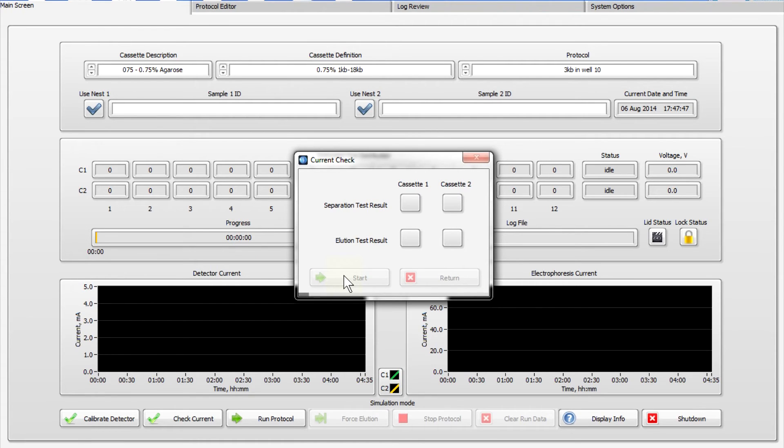A pop up window with a progress bar will appear. At the end of the test, the lid will disengage and the window will indicate whether current test was successful for the separation and elution channels.